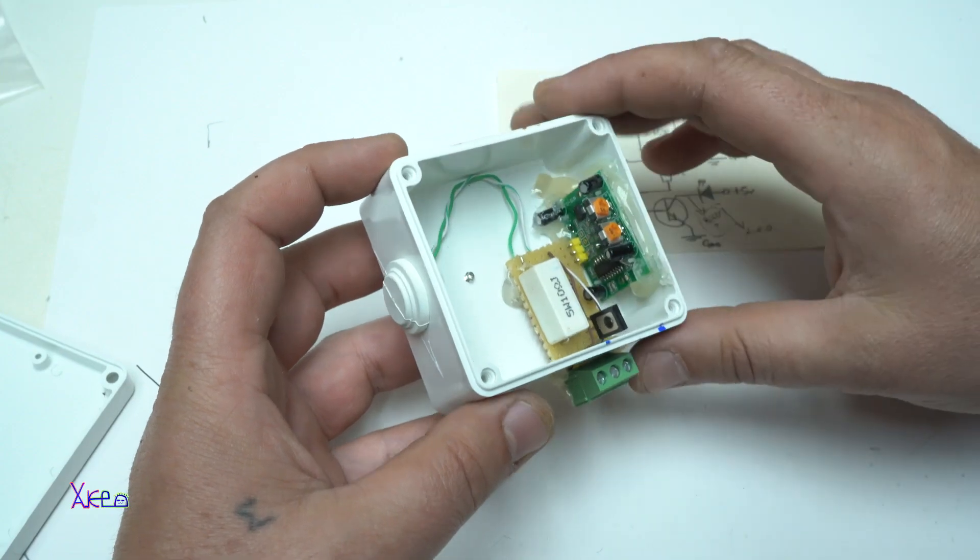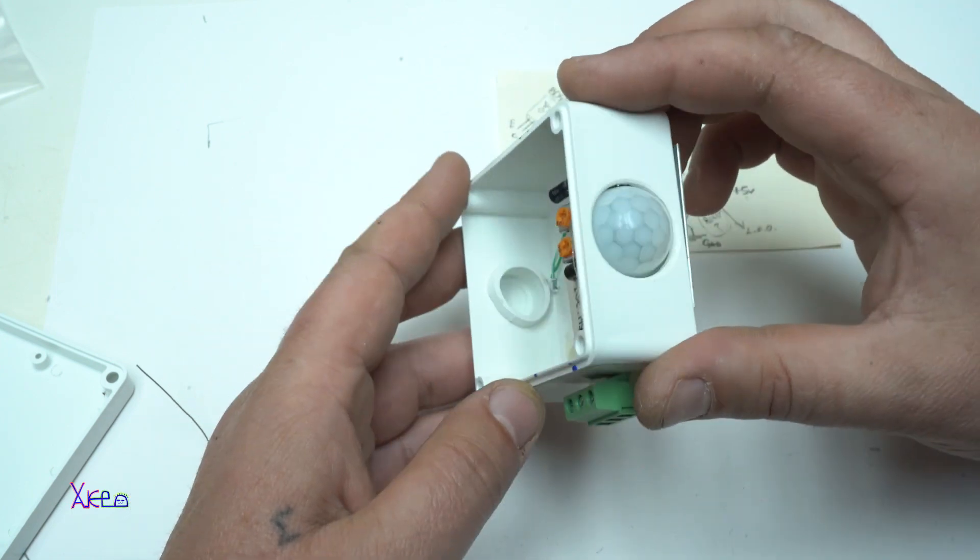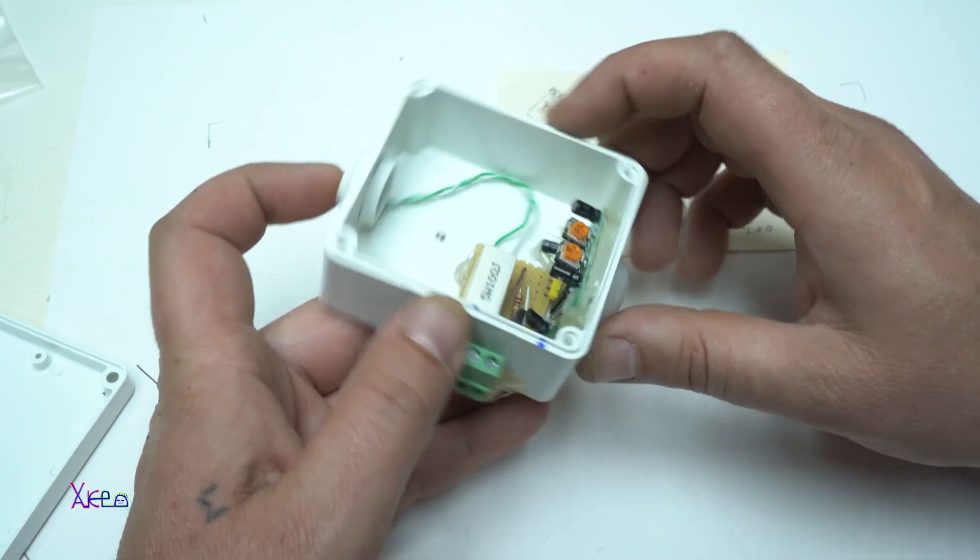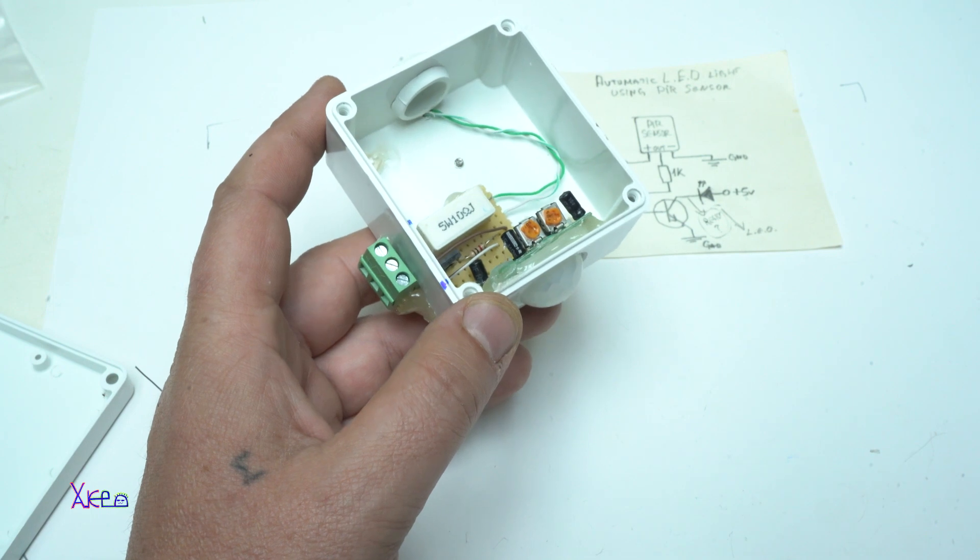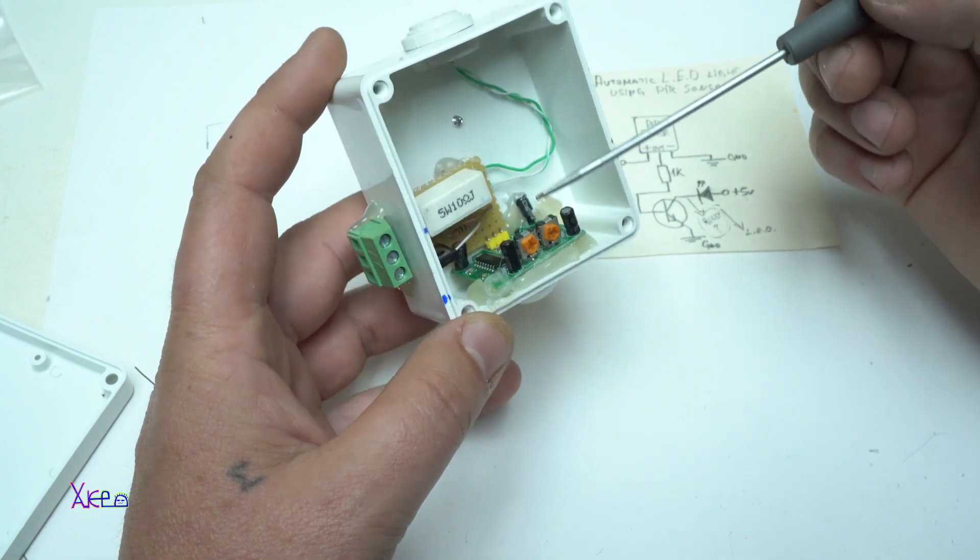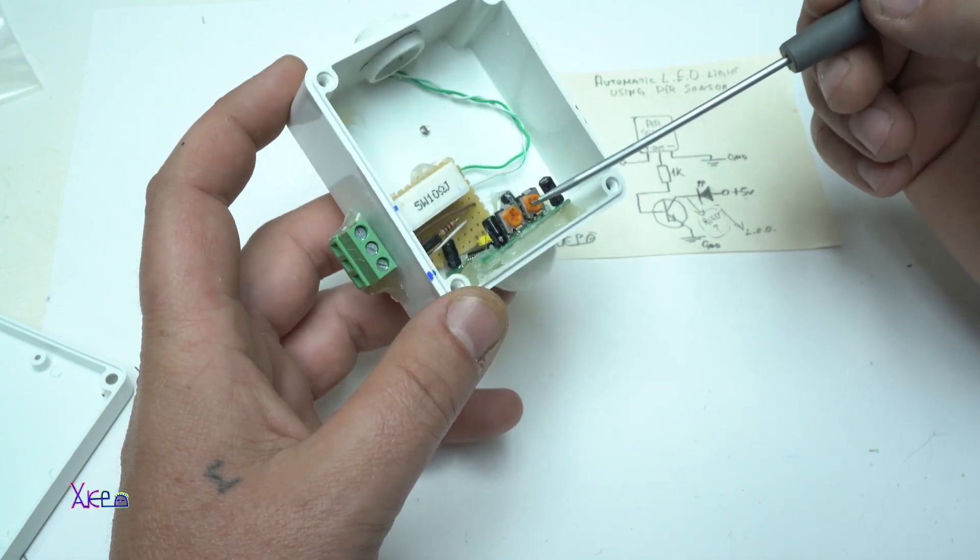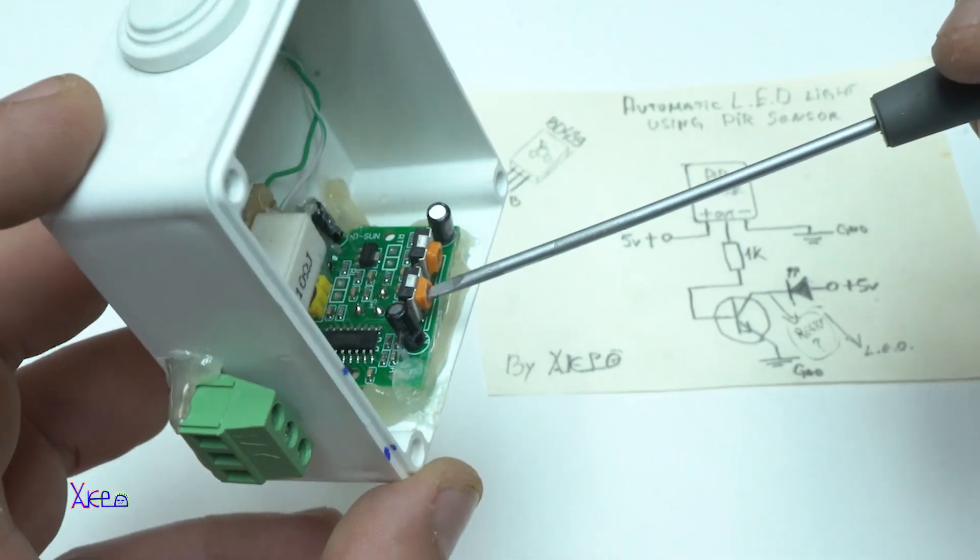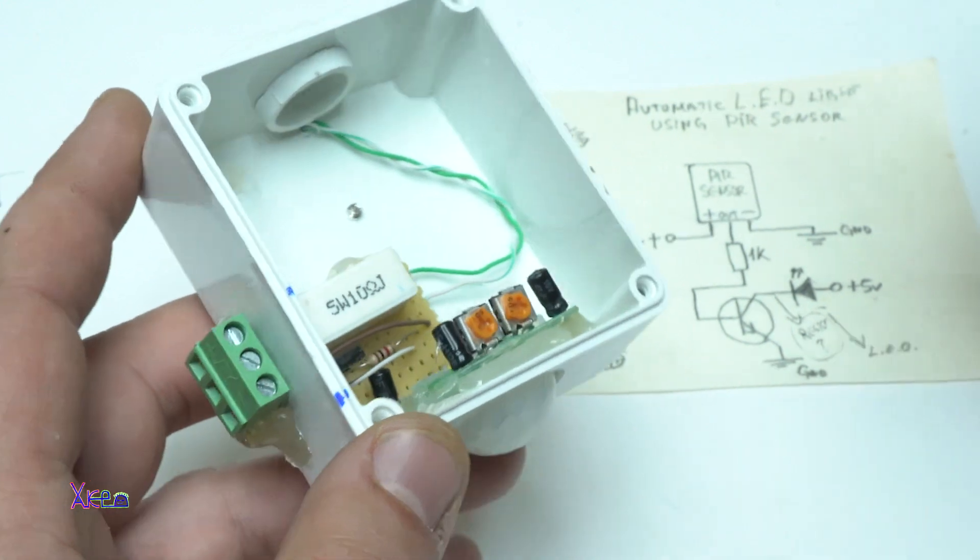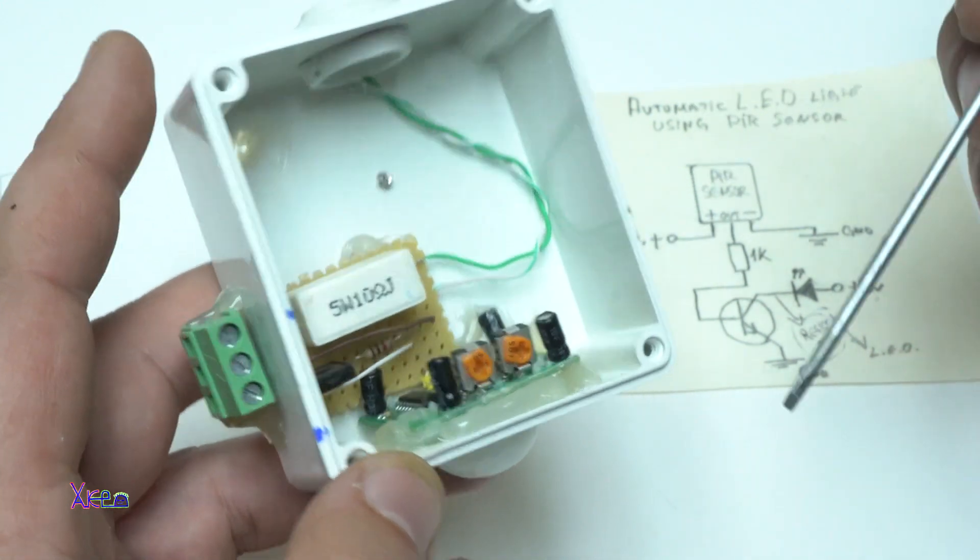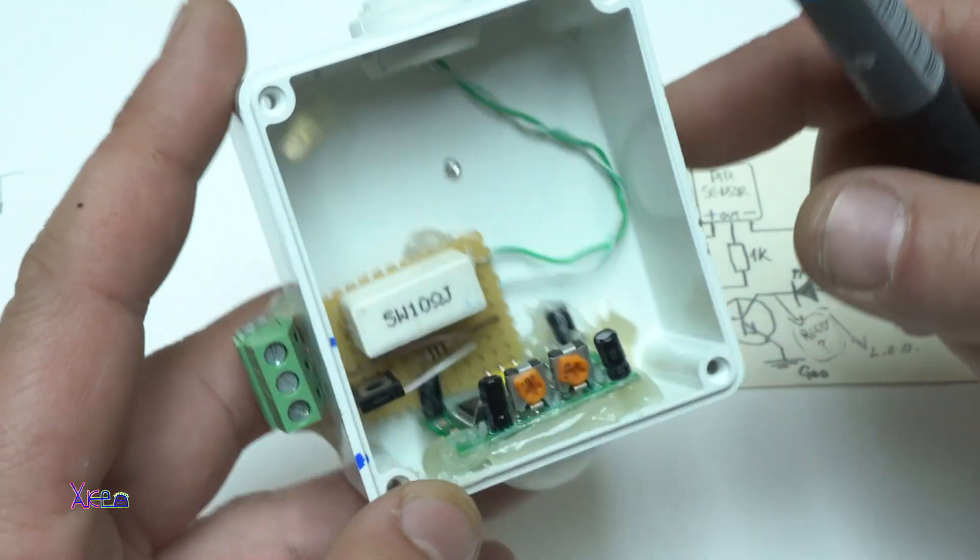Everything is connected and I have already tested, and it's working perfectly. Just to explain why and what are these two potentiometers: one is for regulating the sensor sensitivity, and the other is for regulating the time.